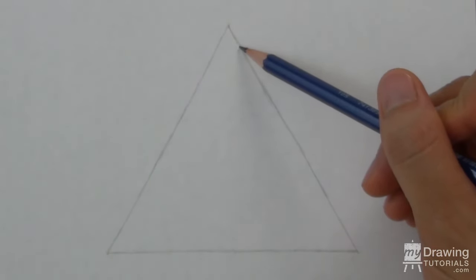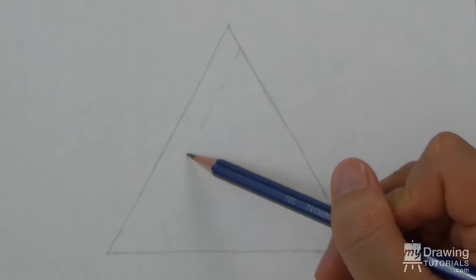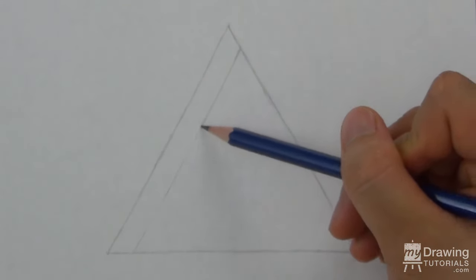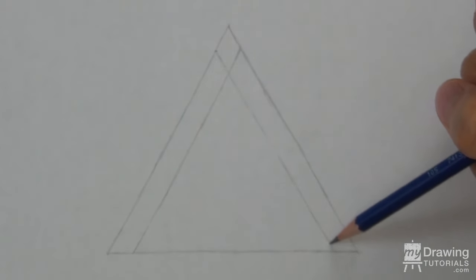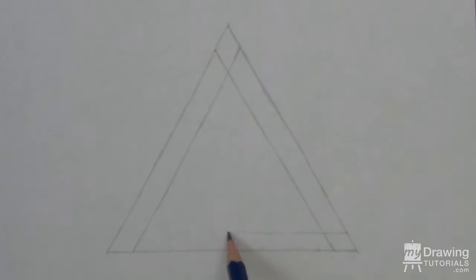Next, within the triangle you just drew, draw the three sides again to form a smaller triangle. The gap between the larger and smaller triangle will determine the thickness of your impossible triangle. I tried to keep this distance relatively thin so that my drawing doesn't get too crowded.